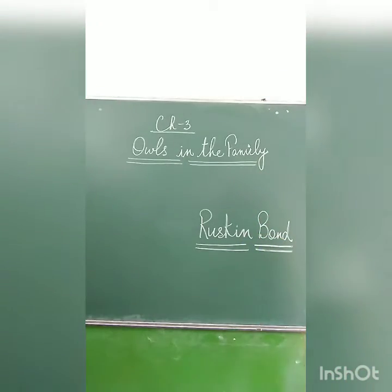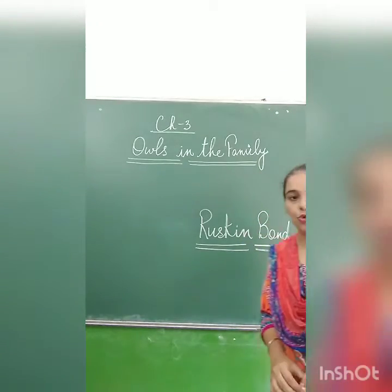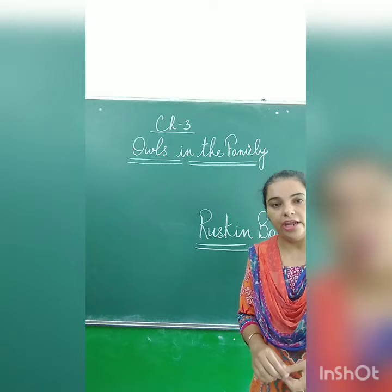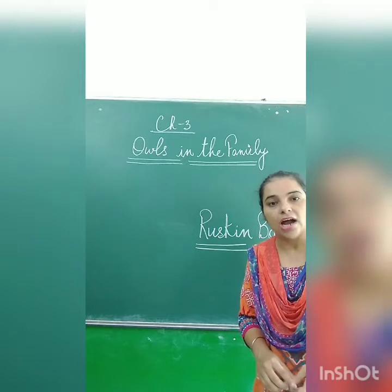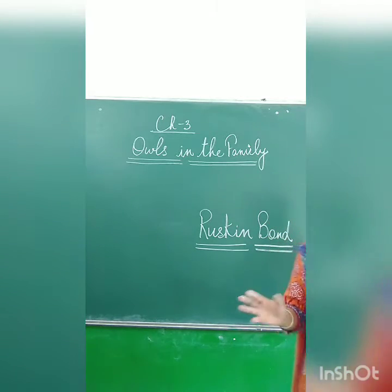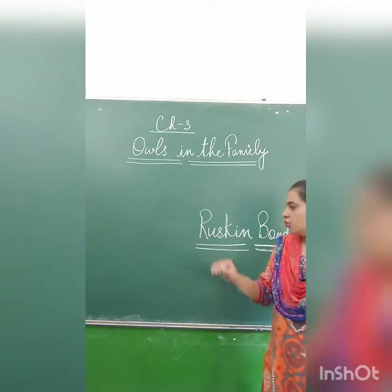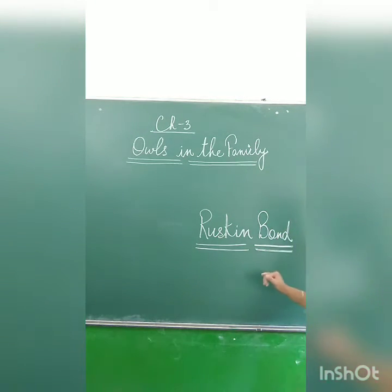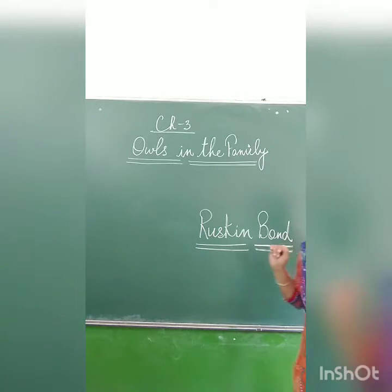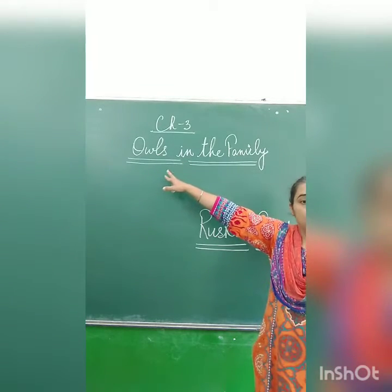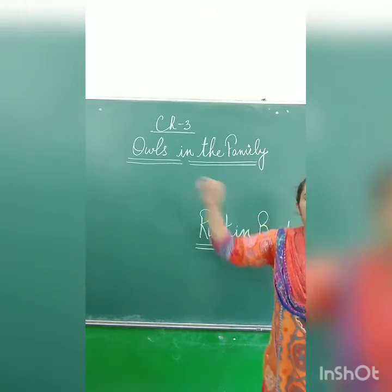He loves children as well as nature also. Nature means there are trees, plants, rivers — all these natural things. So here in this chapter, Ruskin Bond is talking about owls. Owlets.